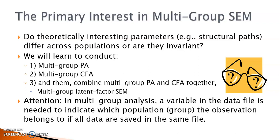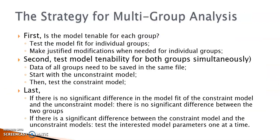Regardless of the model type, we follow the same strategies. First, we need to test whether the proposed model is tenable for each group. In this step, we simply test the model fit for individual groups and, when needed, make justified modifications one group at a time. Second, we put the groups together and test model tenability for all groups simultaneously. We start with an unconstrained model in which model parameters are estimated separately for each group, but the model fit indices are estimated for all groups together.